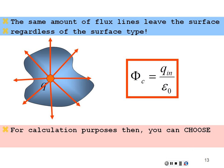This is kind of neat because if you're trying to calculate the flux for calculation purposes, you can choose the easiest surface to enclose the charge. You don't have to use the surface that you were given — if you're just trying to find the flux, you can use any surface. So you're going to choose a surface that makes your calculation the easiest possible. That surface you'll choose is what we're going to call a Gaussian surface — you choose it regardless of the given surface to make the calculation easier.